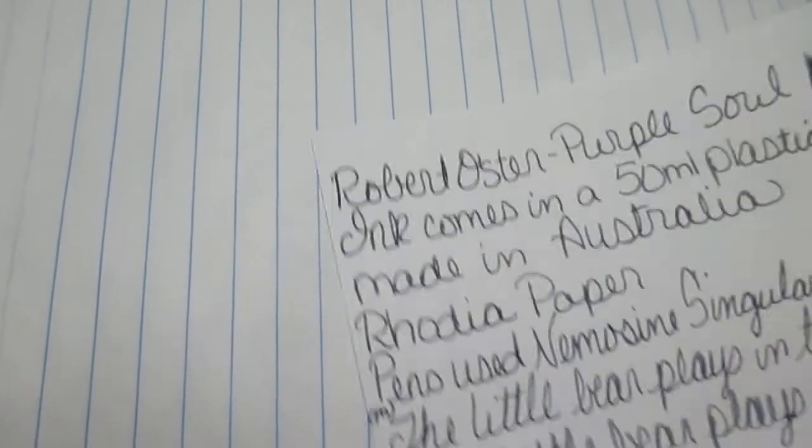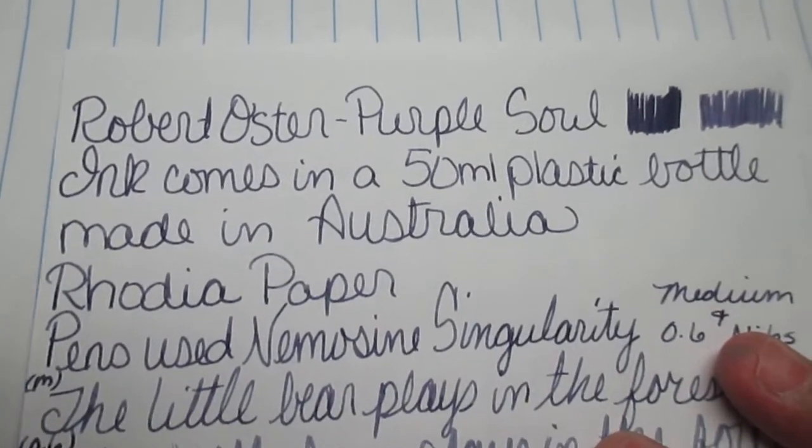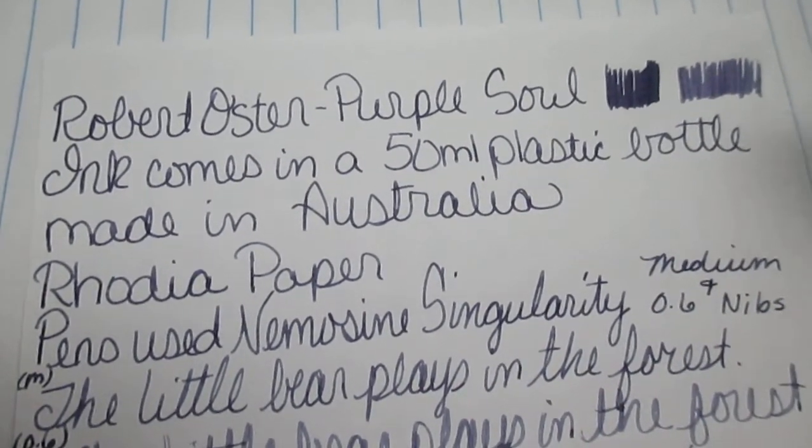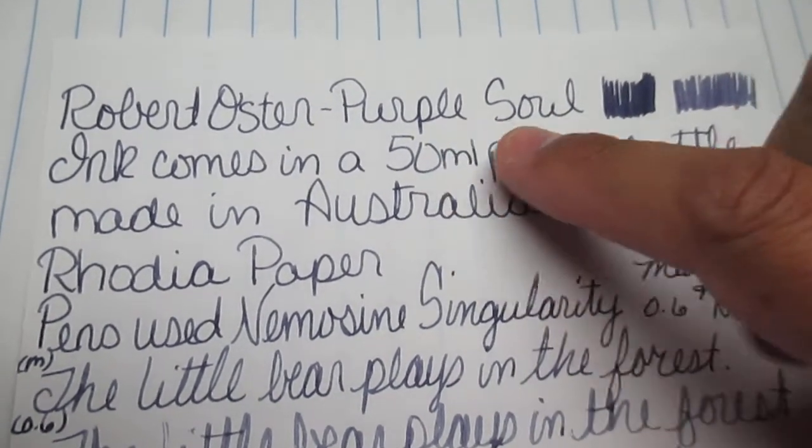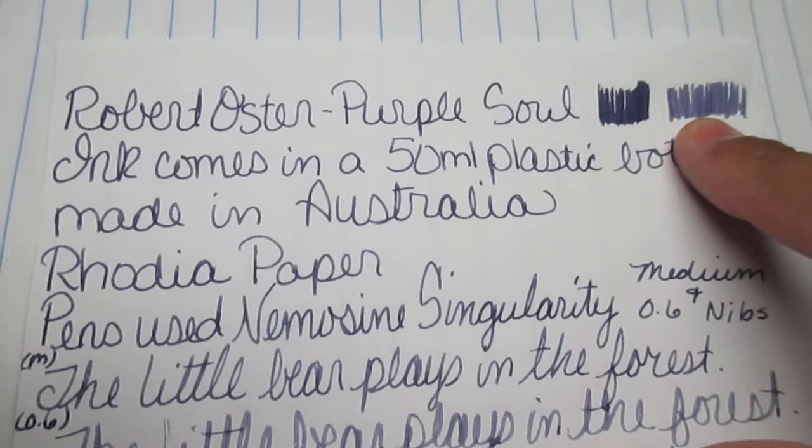Here we are on Rodeo paper. I wrote Robert Oster Purple Soul. I do a medium scrubby and a 0.6 scrubby.